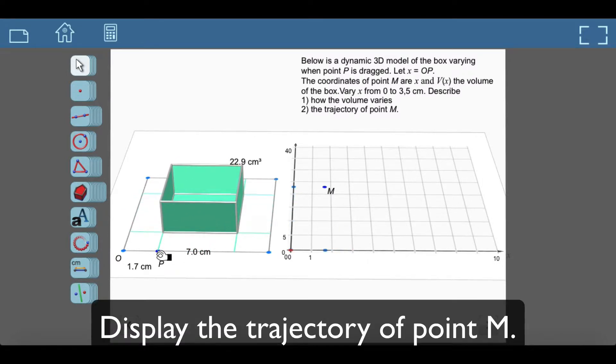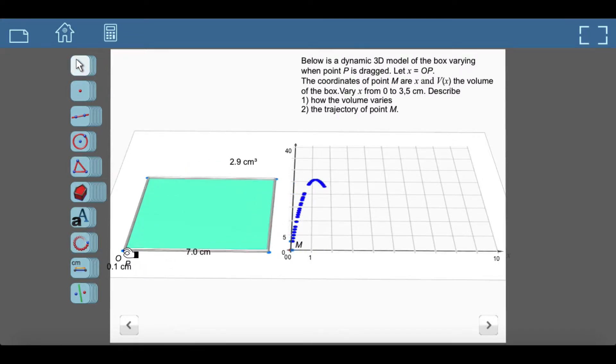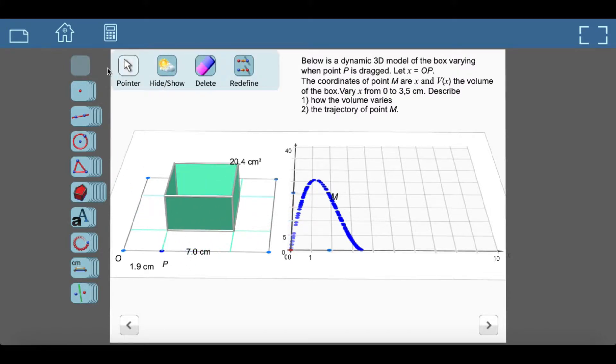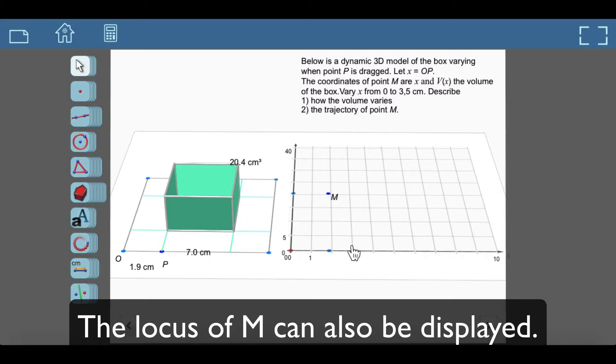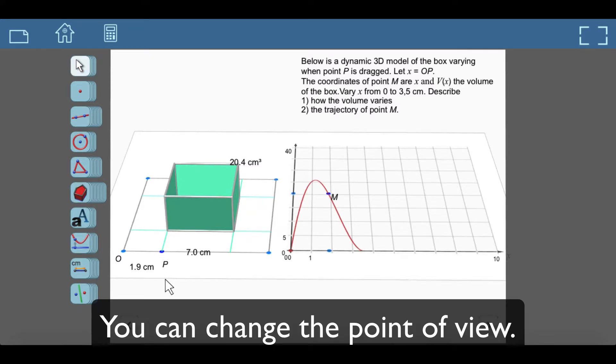Display the trajectory of point M. The locus of M can also be displayed. You can change the point of view.